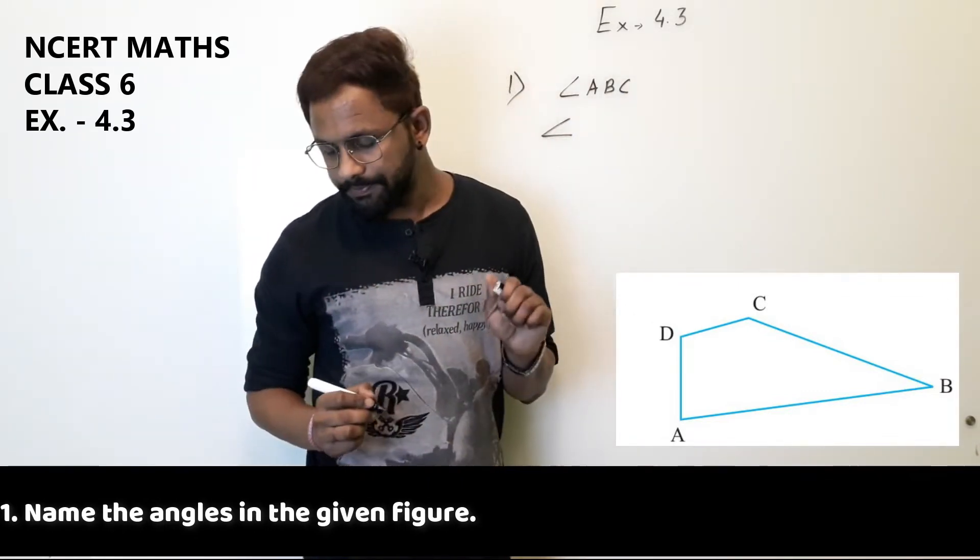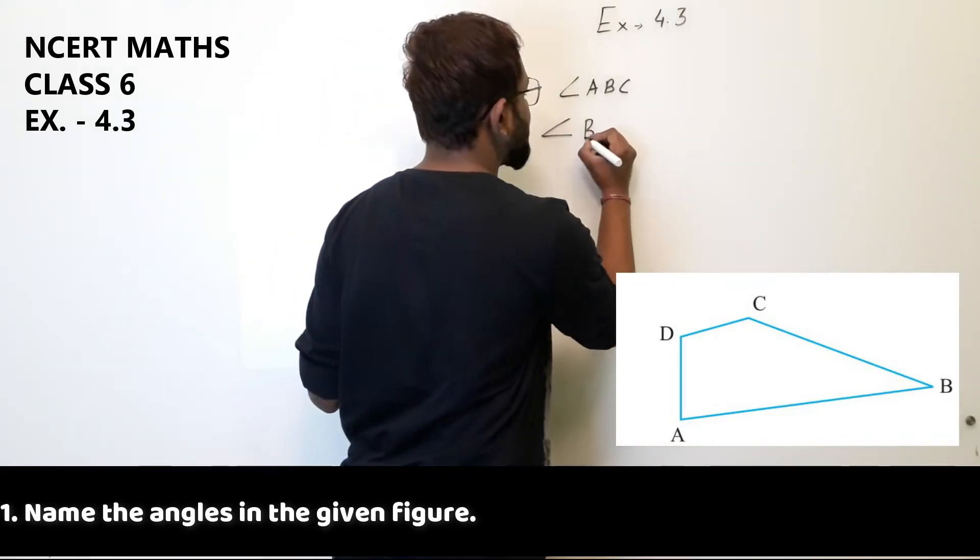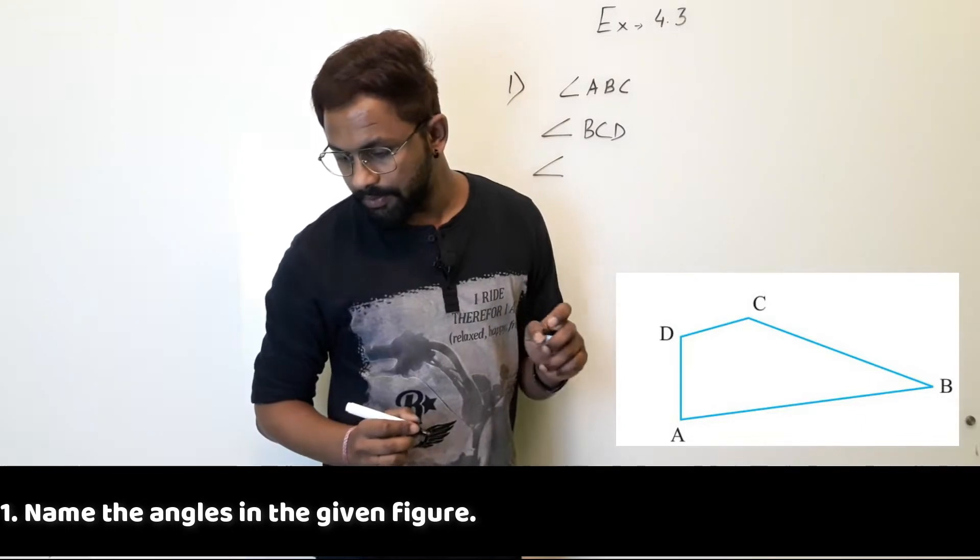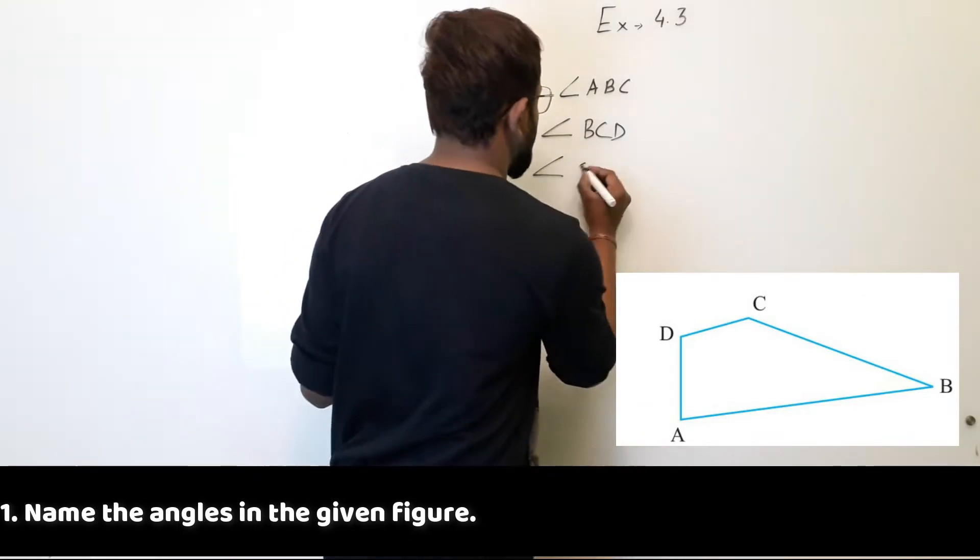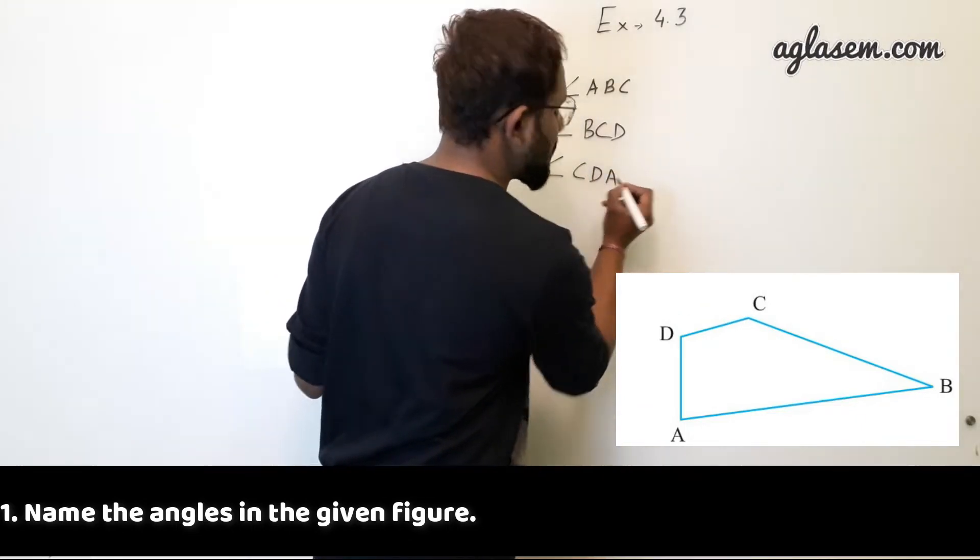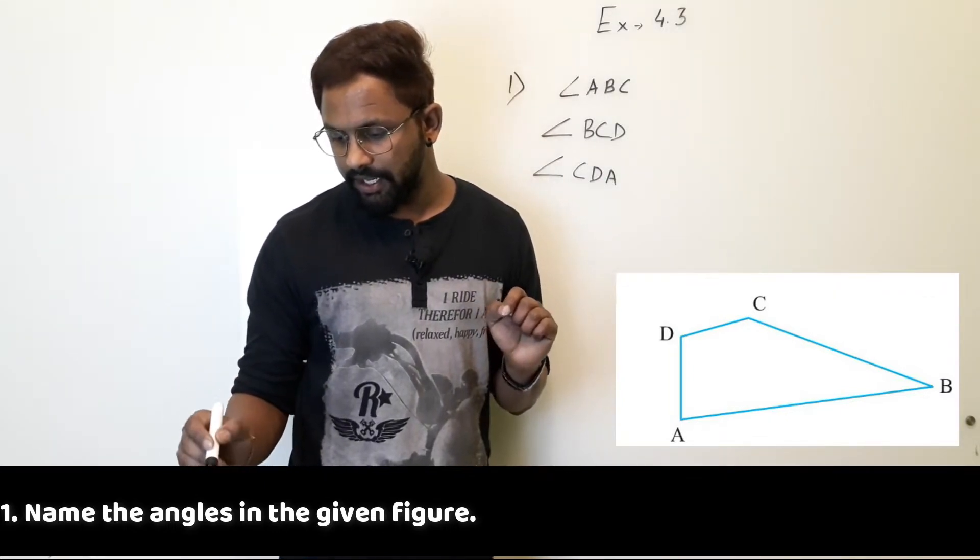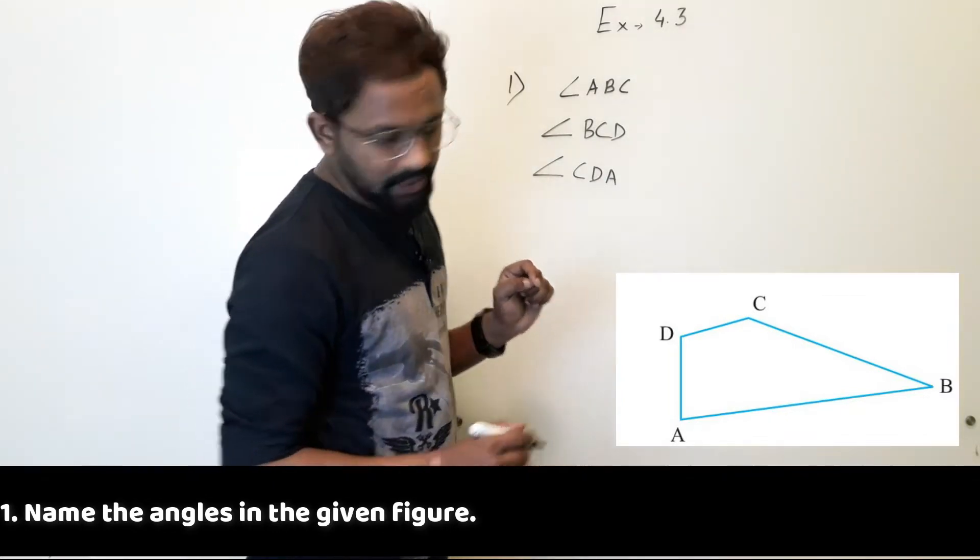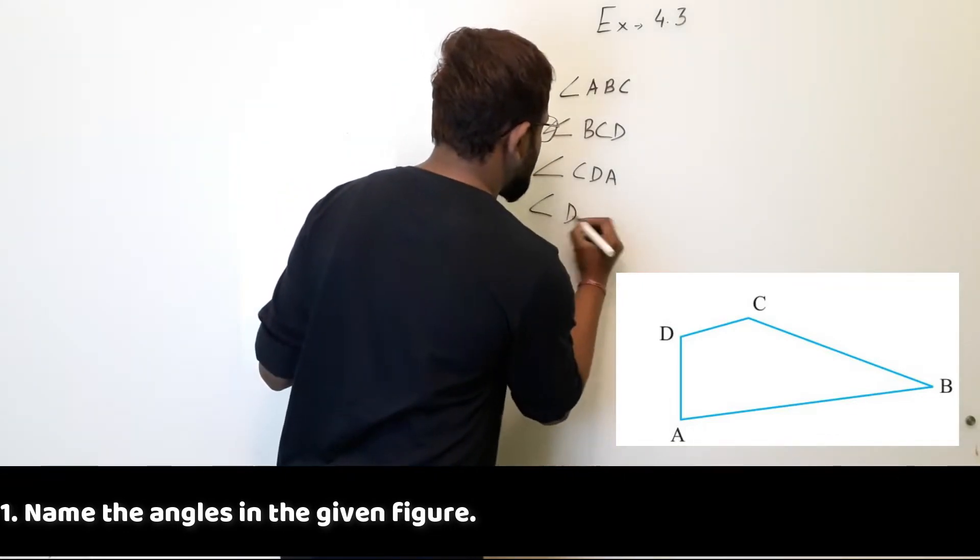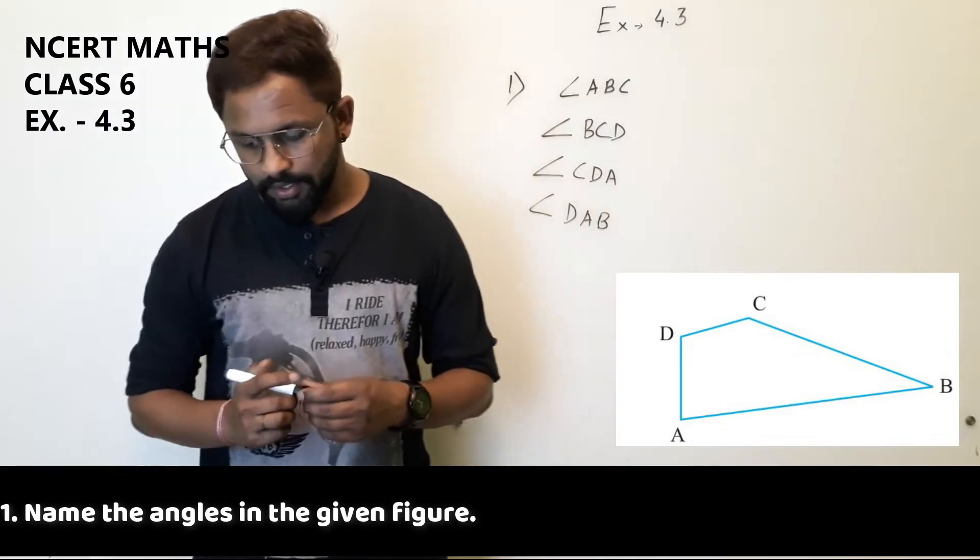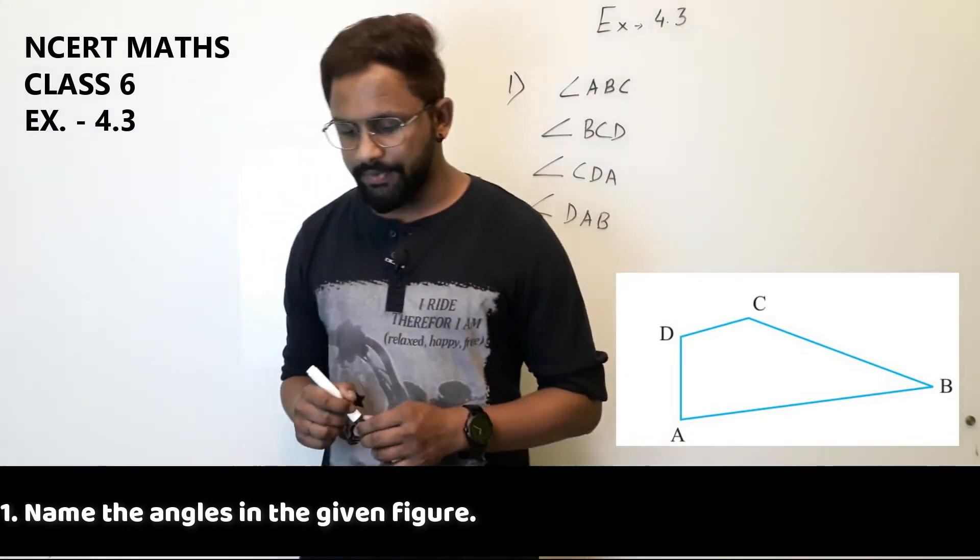Second part, angle BCD. Third angle will be CDA, angle CDA. Angle DAB. So this is the answer from question number one.